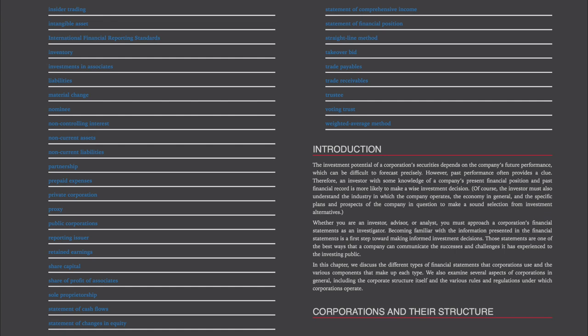Whether you are an investor, advisor, or analyst, you must approach a corporation's financial statements as an investigator. Becoming familiar with the information presented in the financial statements is a first step toward making informed investment decisions. Those statements are one of the best ways that a company can communicate the success and challenges it has experienced to the investing public. In this chapter, we discuss the different types of financial statements that corporations use and examine several aspects of corporations, including the corporate structure itself and the various rules and regulations under which corporations operate.